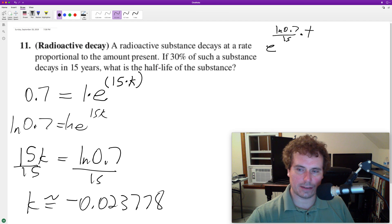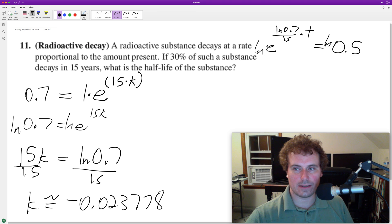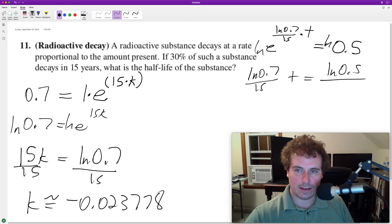Yeah, it's t because this is going to be our half-life, is equal to 0.5 for half-life. Take the natural log of both sides and we end up with natural log of 0.7 over 15t is equal to natural log of 0.5. Divide through by natural log of 0.7 over 15 and we get t is equal to approximately...